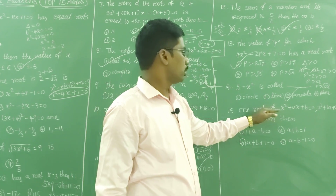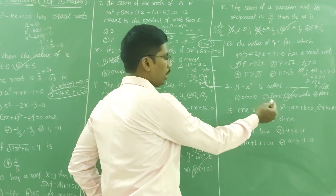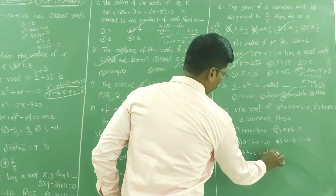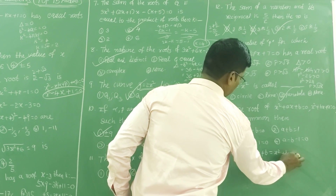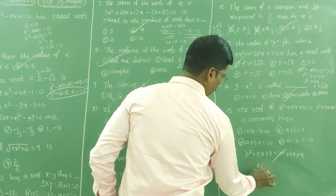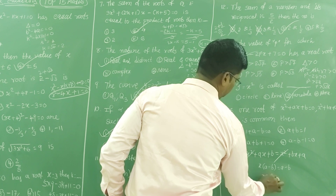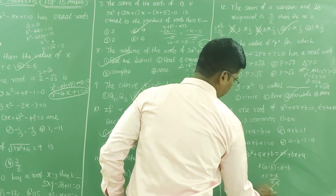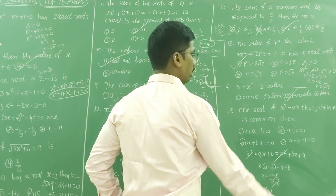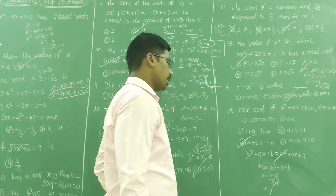If one root is common to the equations x² + ax + b = 0 and x² + bx + a = 0, find the condition. Subtracting the two equations: x(a-b) = (a-b), so x = (a-b)/(a-b) = 1. Substituting x = 1 into the first equation: 1 + a + b = 0. That is the third option.